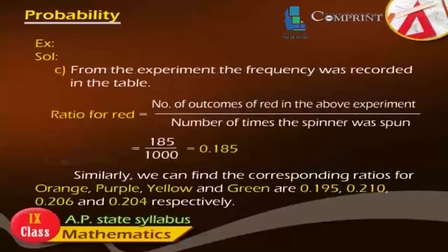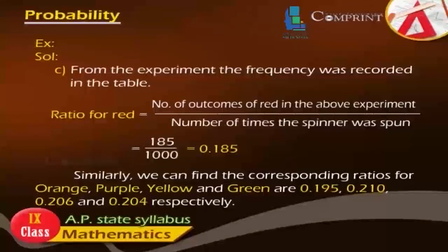C: From the experiment, the frequency was recorded in the table. Ratio of red = number of outcomes of red in the experiment by number of times the spinner was spun = 185 by 1000 = 0.185. Similarly, the corresponding ratios for orange, purple, yellow, and green are 0.195, 0.210, 0.206, and 0.204 respectively.